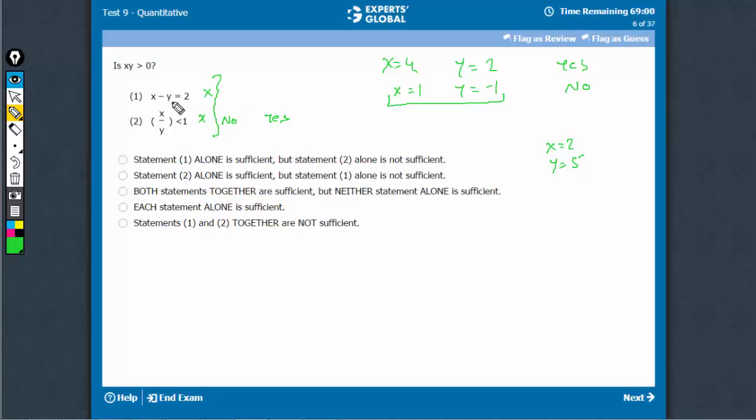Now, when we combine, on combining, let's try to get yes and no as an answer. So, this is definitely a possibility that applies on both the cases, that x minus y is equal to 2 and x upon y is less than 1 and no is an answer. So, on combining, this leads to a no.